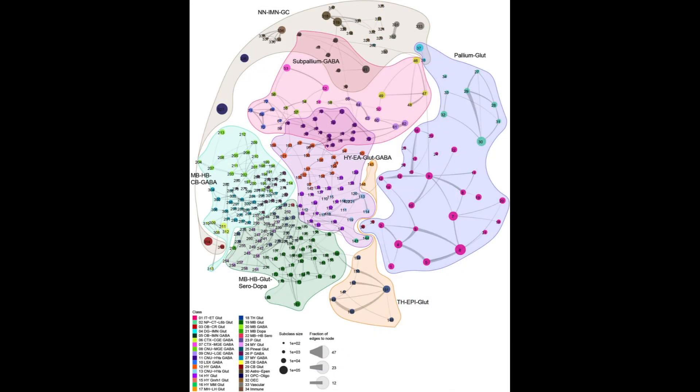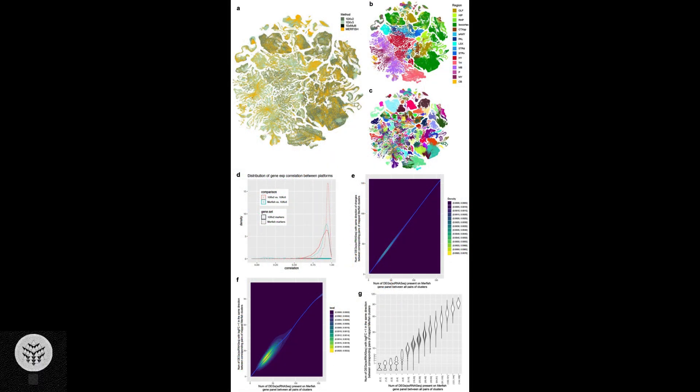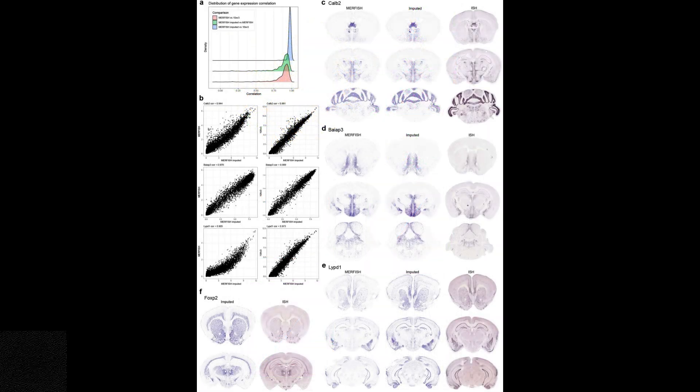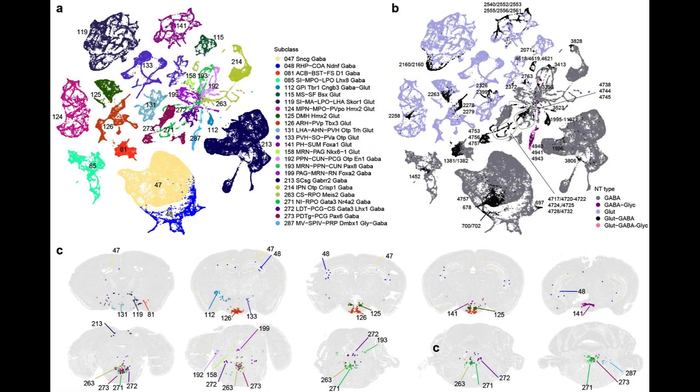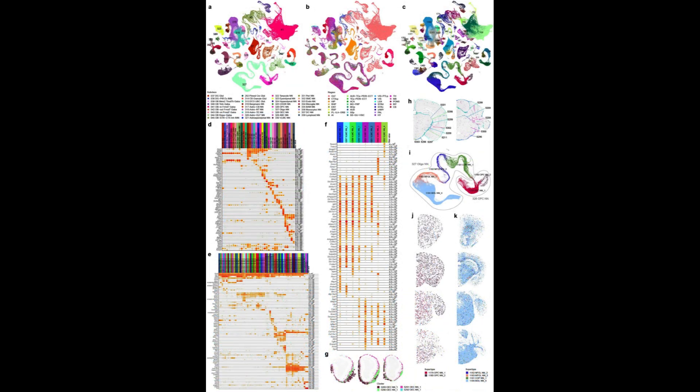The primary objective of the BCCN, an innovative and cooperative endeavor, is to unravel the intricate cellular composition of the brain. This initiative aims to construct a thorough catalog of brain cells, encompassing their spatial distribution, developmental processes, interconnections and regulatory mechanisms. Through this comprehensive understanding, researchers hope to gain insights into the etiology, progression and optimal management of brain disorders.